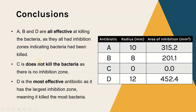For conclusions and explanations: one conclusion could be that A, B, and D are all effective at killing this particular bacteria - the explanation is because they all had inhibition zones indicating bacteria were killed. Another conclusion is that antibiotic C does not kill the bacteria - the explanation is there was no inhibition zone around it. Finally, D is the most effective antibiotic out of these four at killing this particular bacteria - the explanation is it had the largest inhibition zone, meaning it killed the most bacteria.